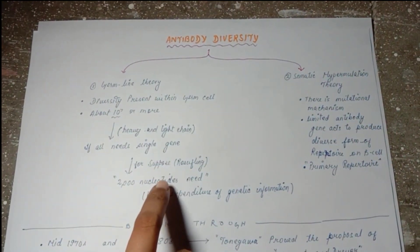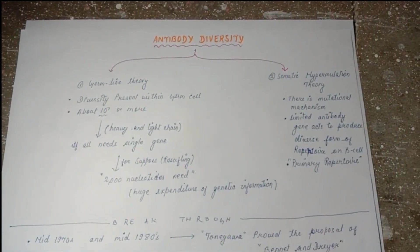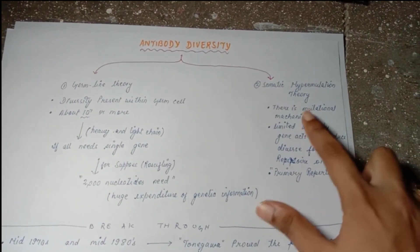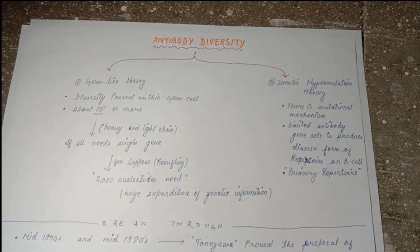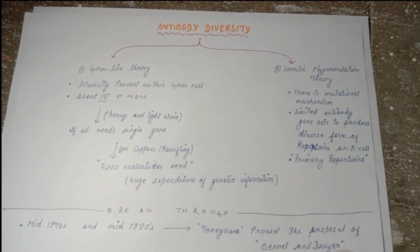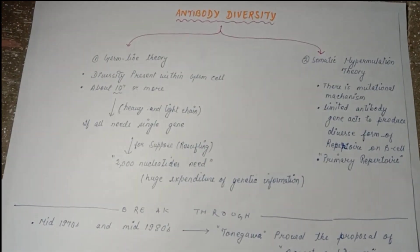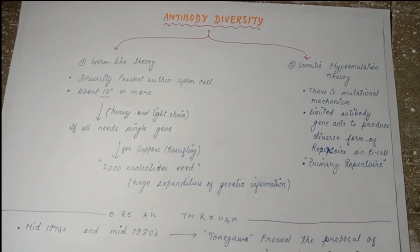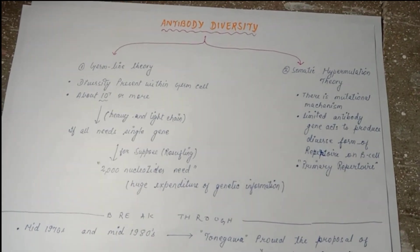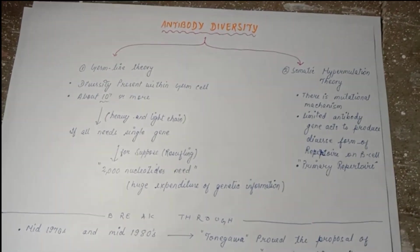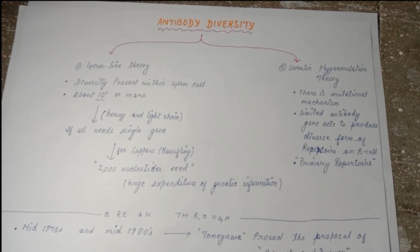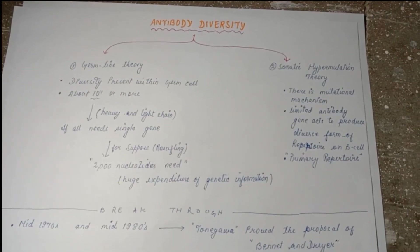When somatic hypermutation theory came, this is the second theory. This says that there's a mutational mechanism. Antibody formation happens in the B cell. As B cell is activated and becomes plasma cell, then antibody formation occurs. This tells that there is some primary receptor in which several sorts of mutations are occurring, and that mutation leads to different forms and diversity of antibody. This theory is also known as primary receptor theory.